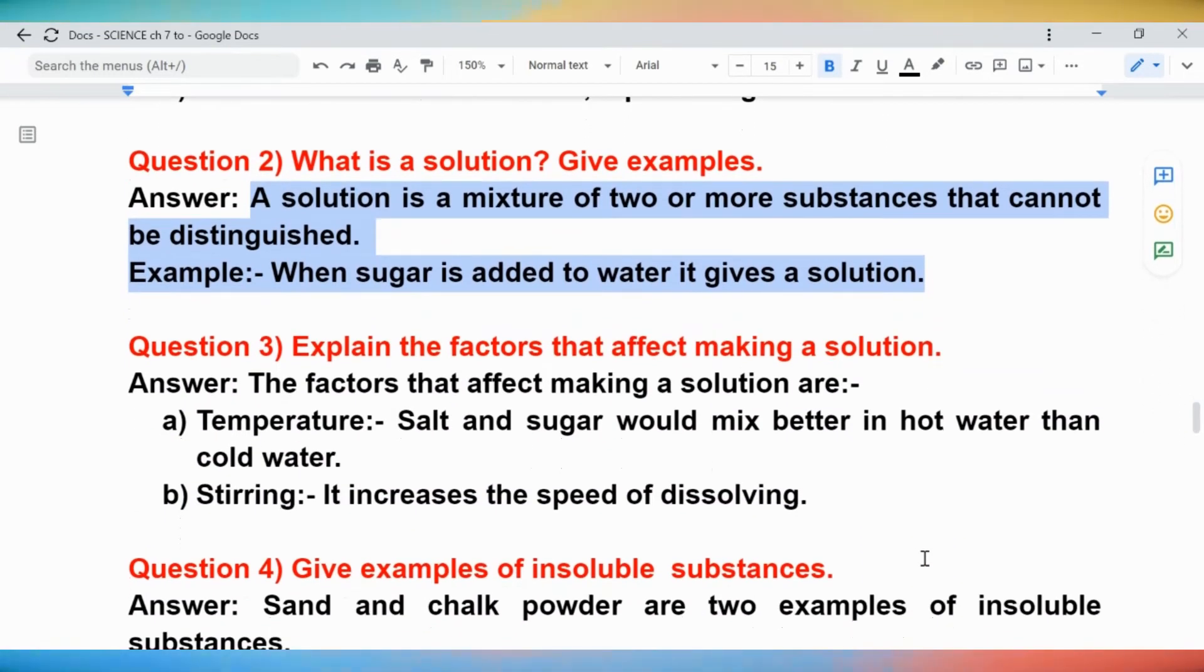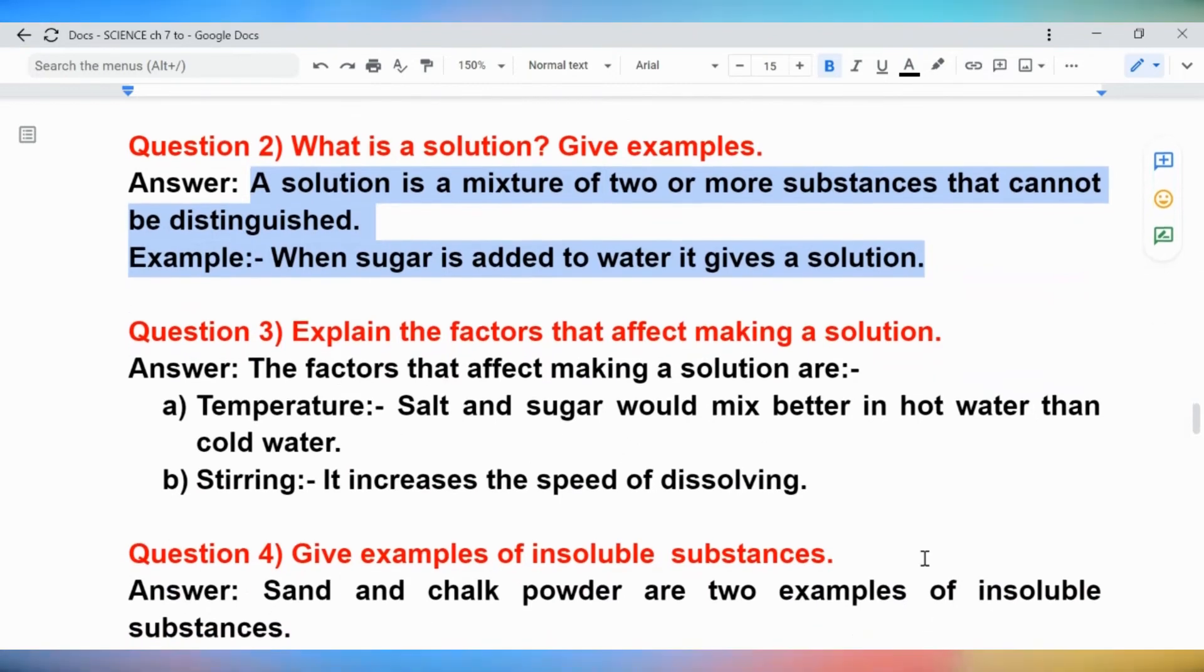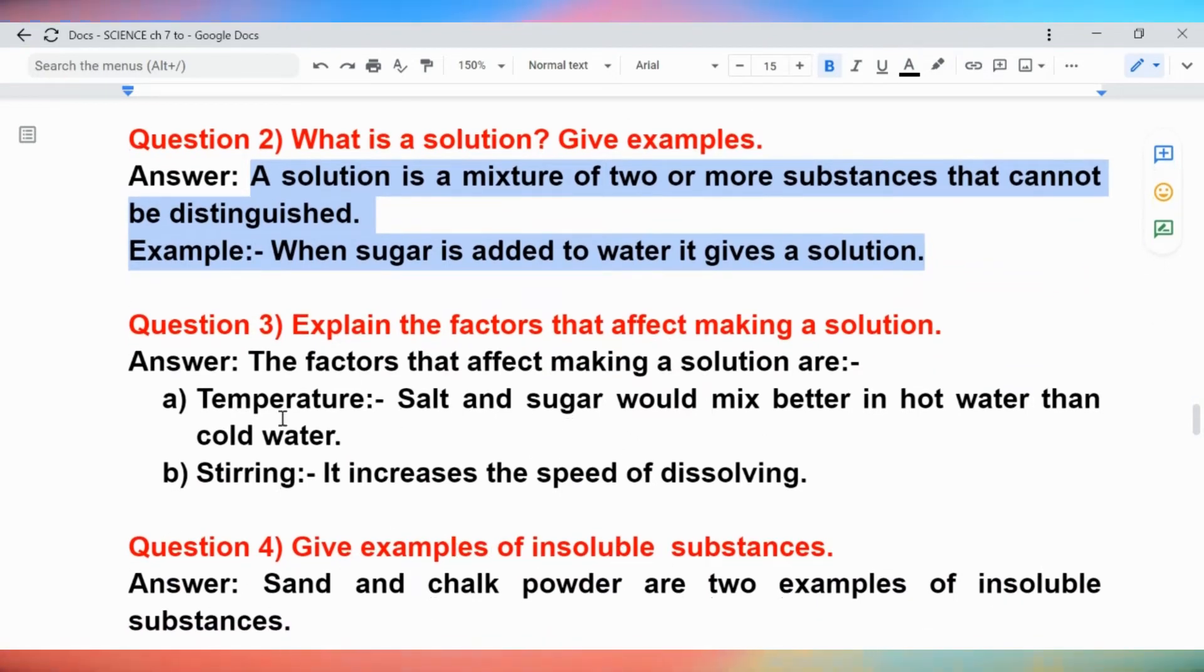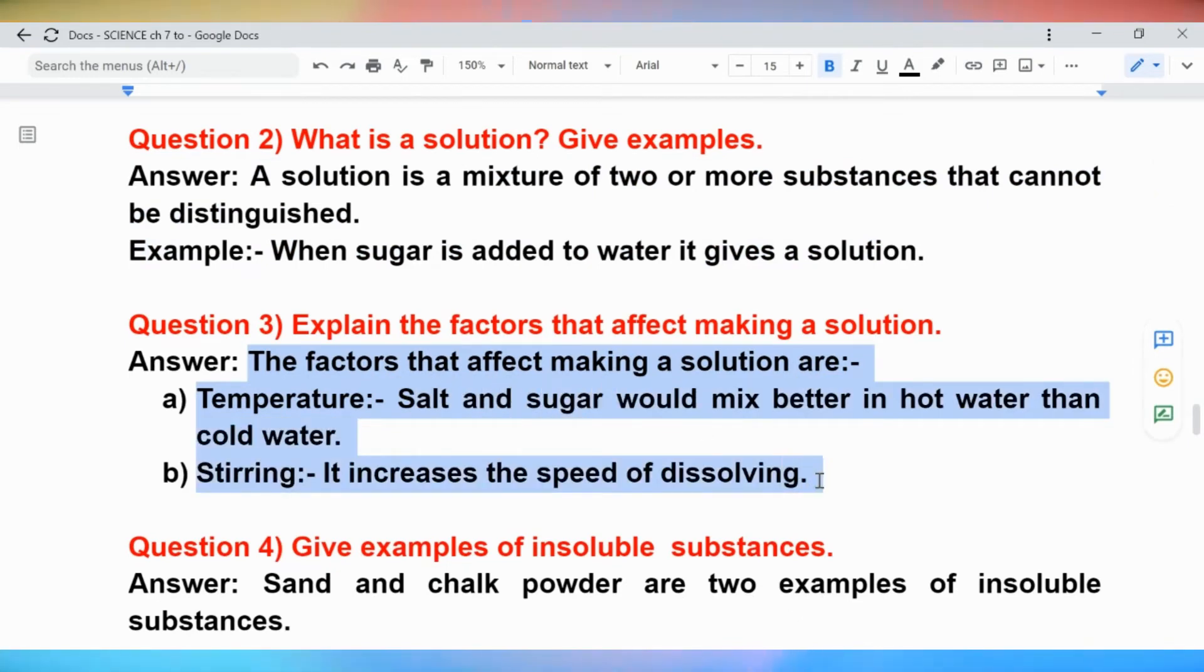Question 3: Explain the factors that affect making a solution. Answer: The factors that affect making a solution are: Temperature - Salt and sugar would mix better in hot water than cold water. Stirring - It increases the speed of dissolving.